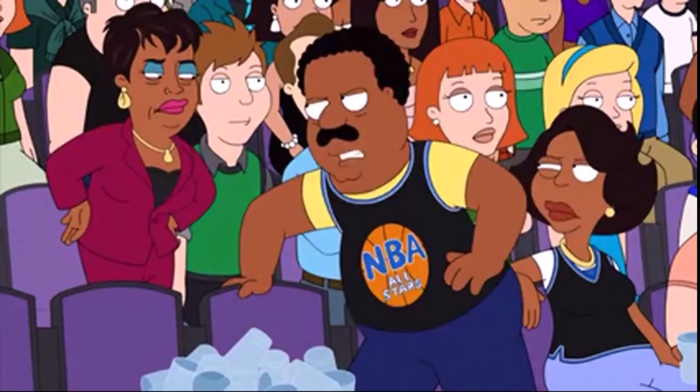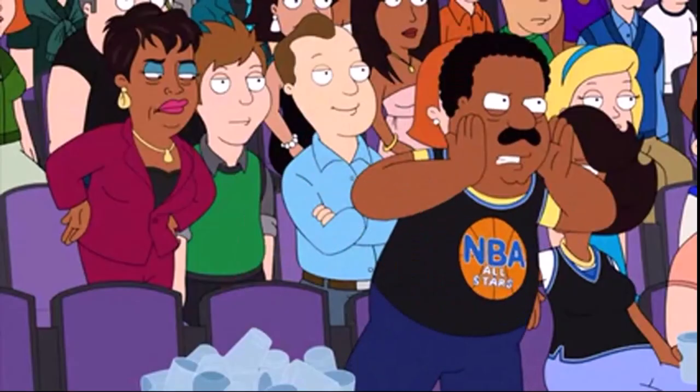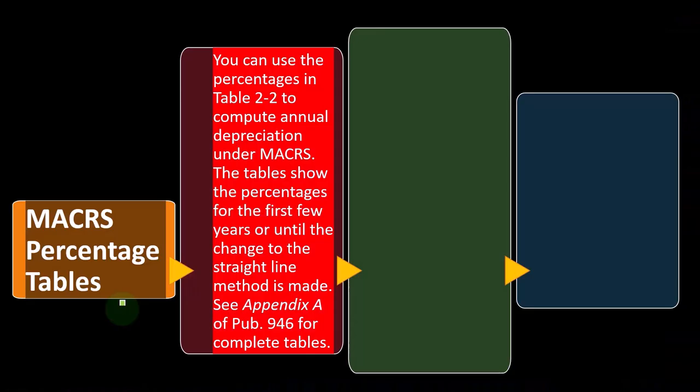MACRS percentage tables. You can use those percentage tables in Table 2-2 to compare annual depreciation under MACRS. The tables show the percentages for the first few years or until the change to the straight-line method is made.